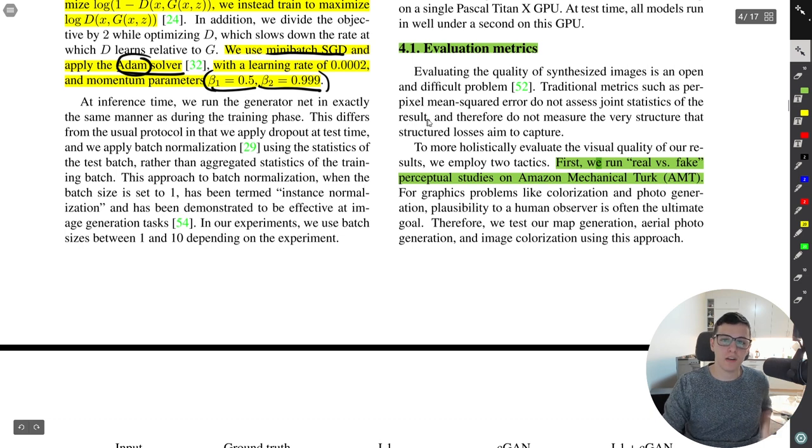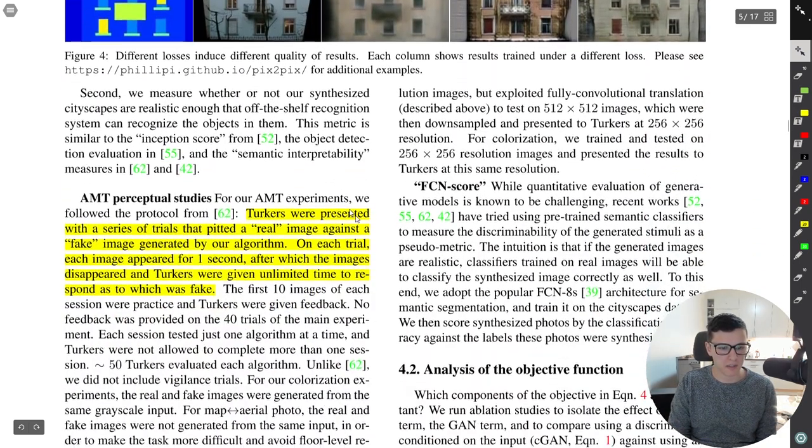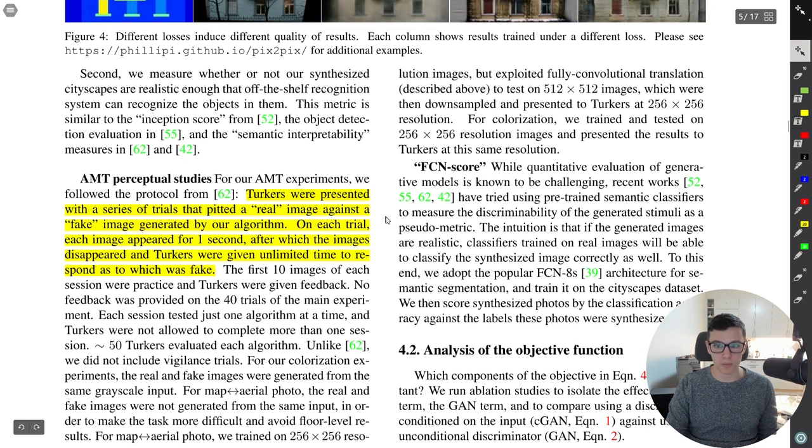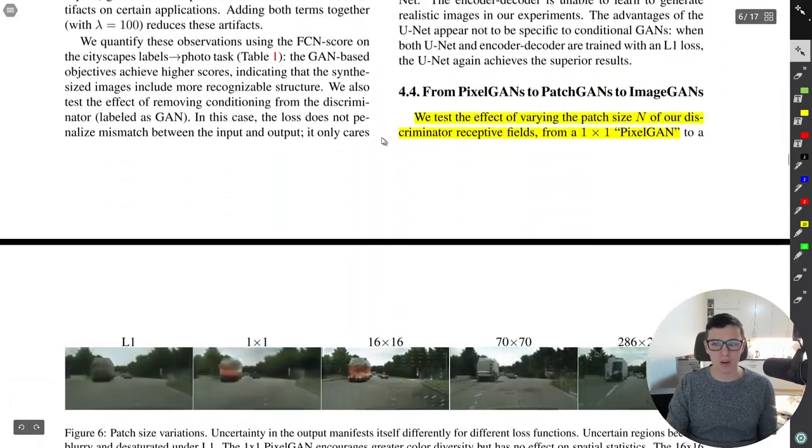And then, yeah, also they had kind of a funny way of evaluating their GAN. So I guess they had sort of a more standard metric. But they also ran real versus fake perceptual studies on Amazon Mechanical Turk. So, you know, they detail it a little bit later on. So Turkers, I didn't know that was a word, but Turkers were presented with a series of trials that pitted a real image against a fake image. And then on, I guess on each of those trials, the image was shown for a second and then the labeler, I guess, the turker were responsible to sort of say which one was fake. And I guess they used that to evaluate if their GAN was good or not, which is kind of funny to me. But anyways, moving on to the more important stuff.